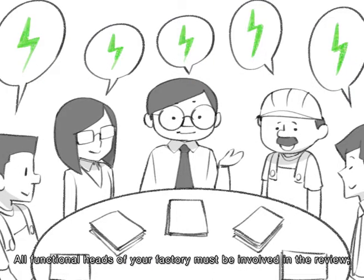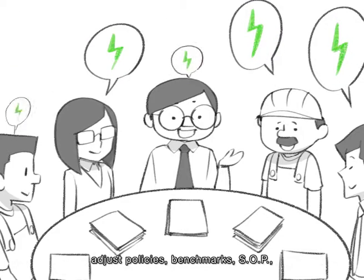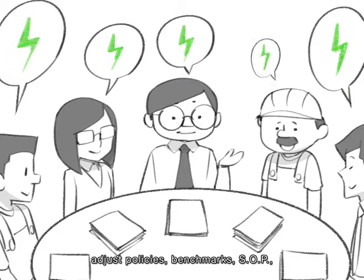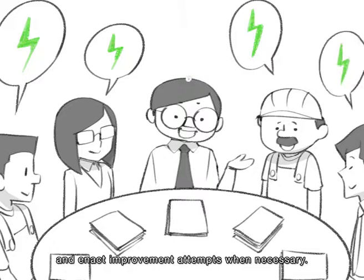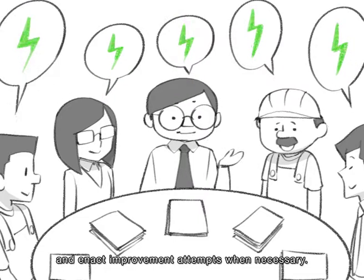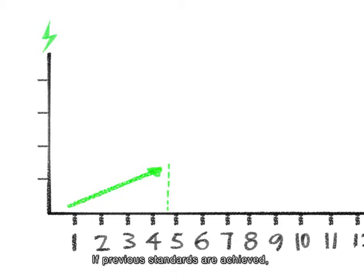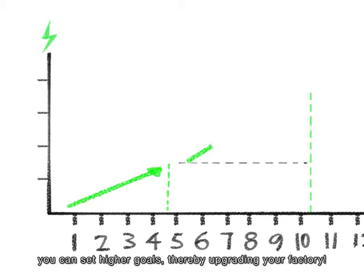Adjust policies, benchmarks, SOPs, and enact improvement attempts when necessary. If previous standards are achieved, you can set higher goals, thereby upgrading your factory.